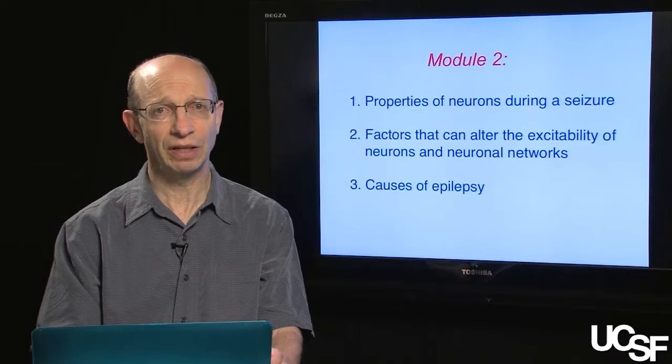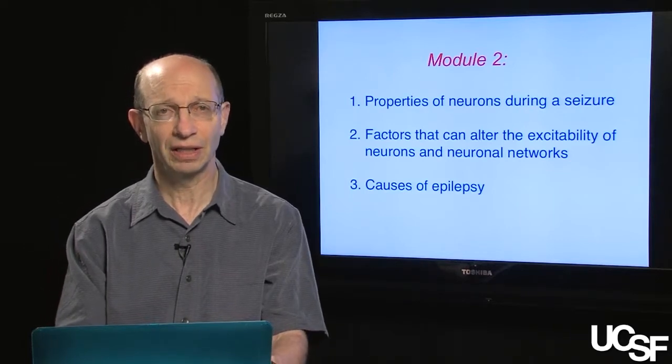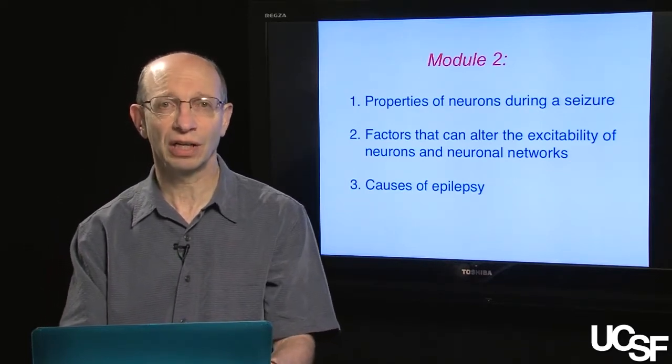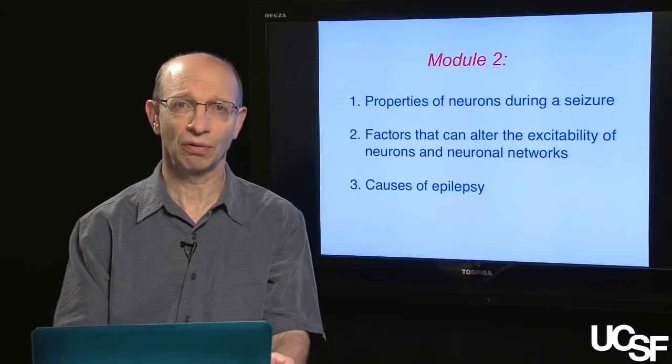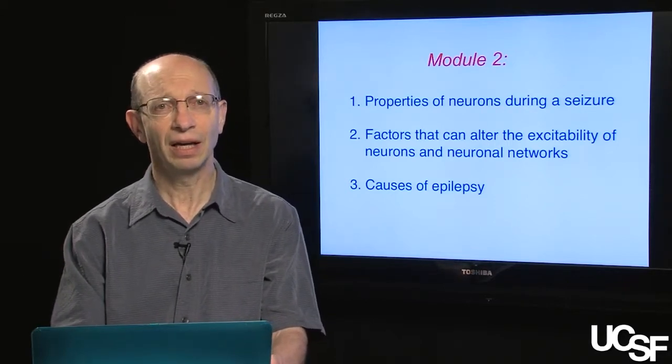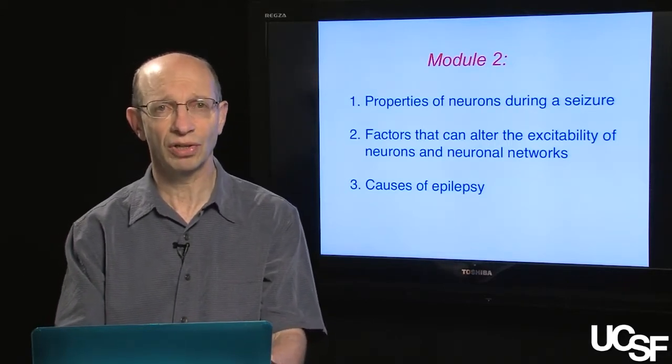In this module, I'd like to cover three main areas. First, the properties of individual neurons during a seizure. Secondly, the factors that can alter the excitability of neurons in neuronal networks. And finally, an initial discussion on the causes of epilepsy.